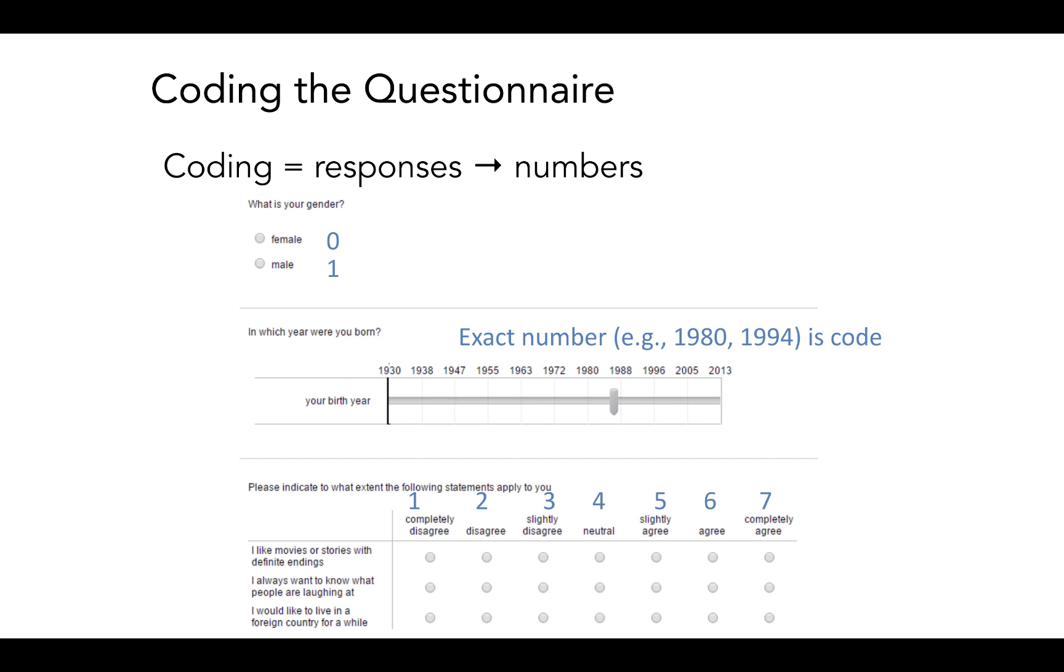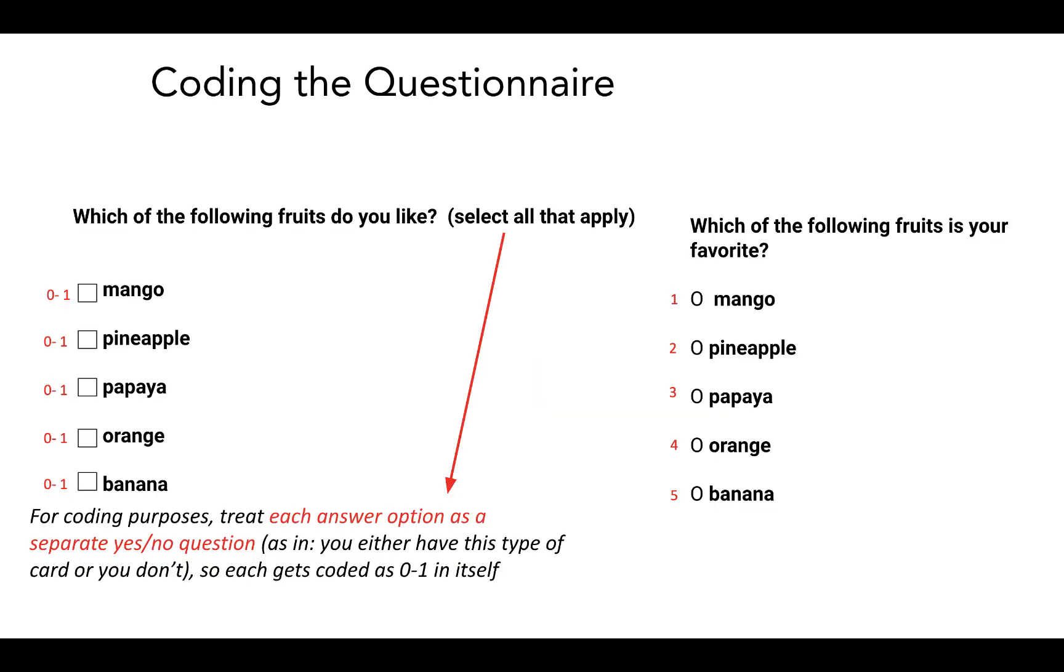However, there's one particular case where it gets a little tricky that requires a bit more explanation. So that is those check all that apply questions. Consider the following two questions here on the screen. On the left side, you see which of the following fruits do you like? On the right side, you see which of the following fruits is your favorite? So let's look on the right side first. Which of the following fruits is your favorite? Mango, pineapple, papaya, orange, banana, and of course many more. But this is a simple example.